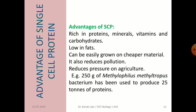The advantages of single cell protein are: it is rich in proteins, minerals, vitamins, and carbohydrates; it is low in fats; and it can be grown on cheaper materials such as molasses, water from potato processing, and cow dung waste. It also helps in reducing pressure on agriculture. A notable example is that 25 to 50 grams of Methylophilus methylotrophus bacterium can be used to produce 25 tons of protein.